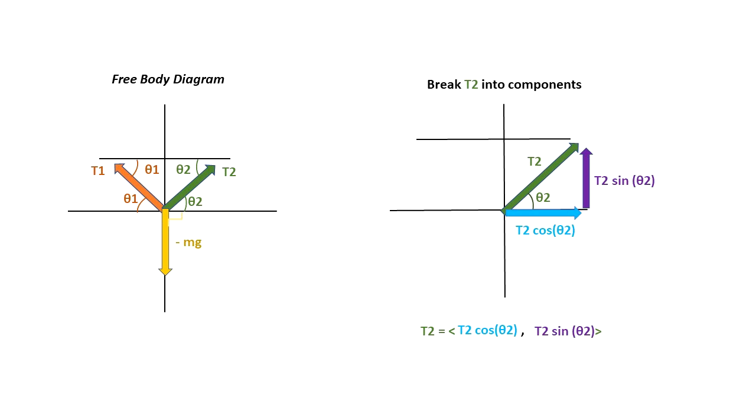So the y component of T2 is T2 sine of theta2 and the x component of T2 is T2 cosine of theta2. And you can see down that it's the vector notation, the x component and y component.